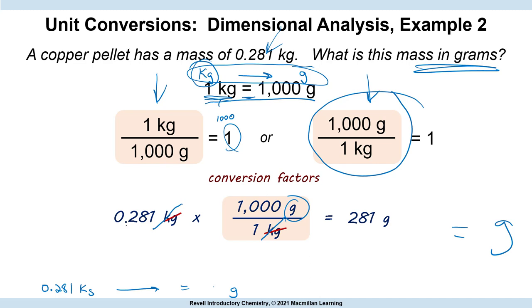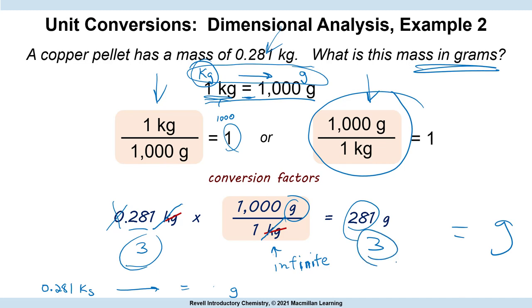Multiply by 10 to the third and we get 281 grams. Note your significant figures: the leading zero is not significant, so we have three sig figs and write three in our answer because we are multiplying. A metric conversion has an infinite number of sig figs — there's exactly a thousand grams in a kilogram. Three sig figs in 0.281, three sig figs in our answer. Don't forget your unit.